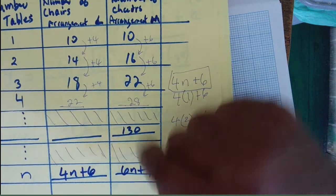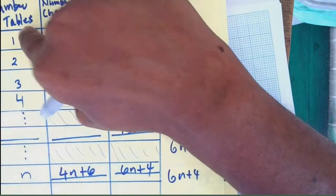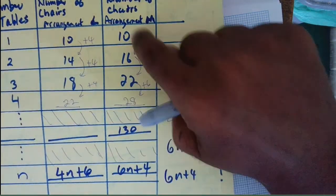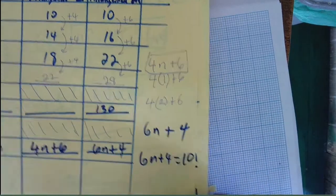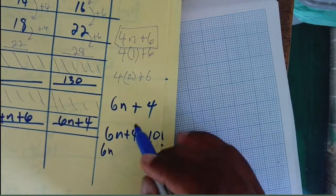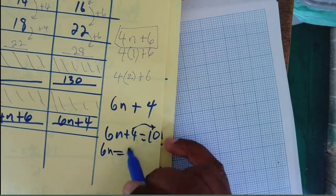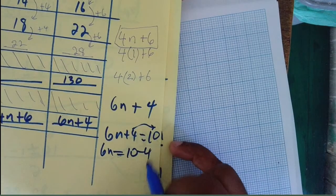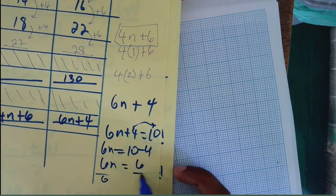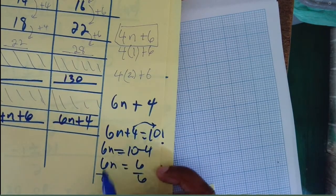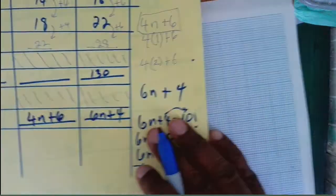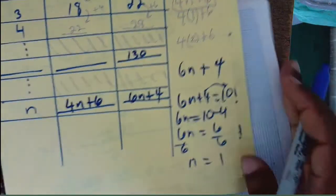When I equate 6n + 4 to 10, I should get n = 1. Let's see: 6n + 4 = 10. Transpose the 4: 6n = 10 − 4 = 6. Divide both sides by 6: n = 1.